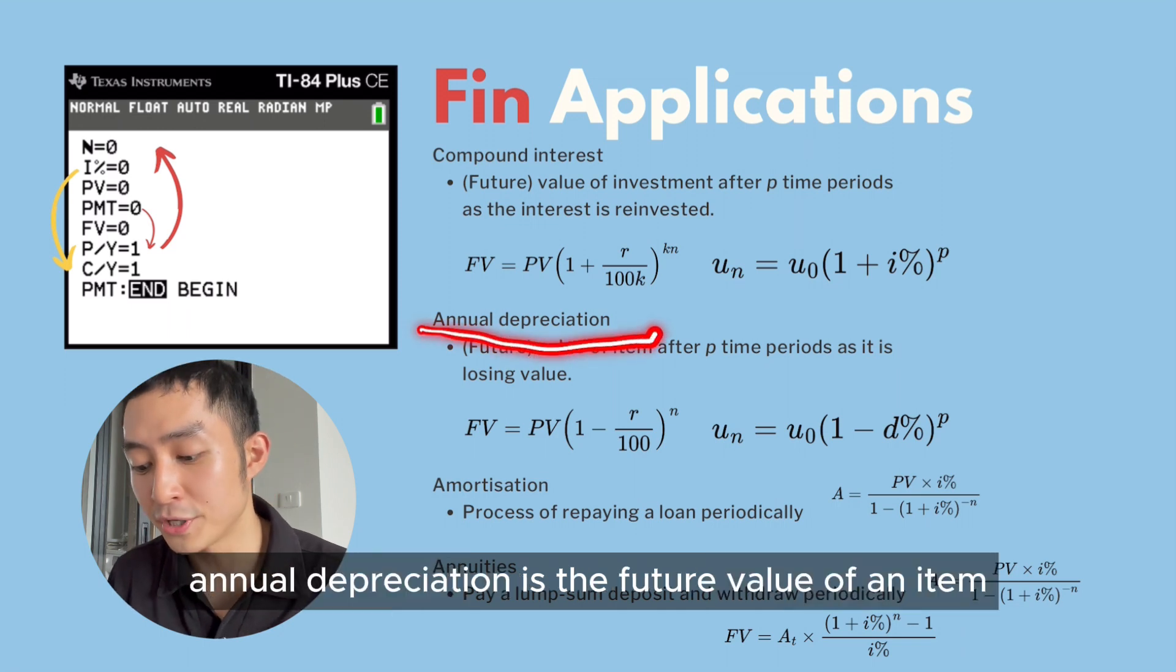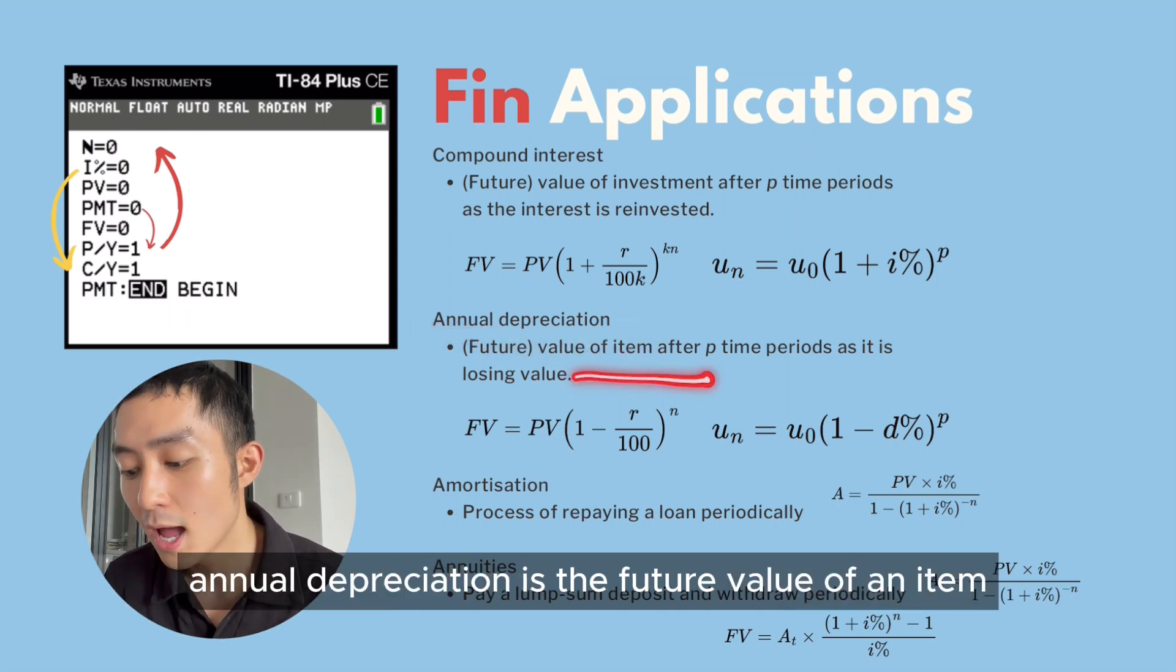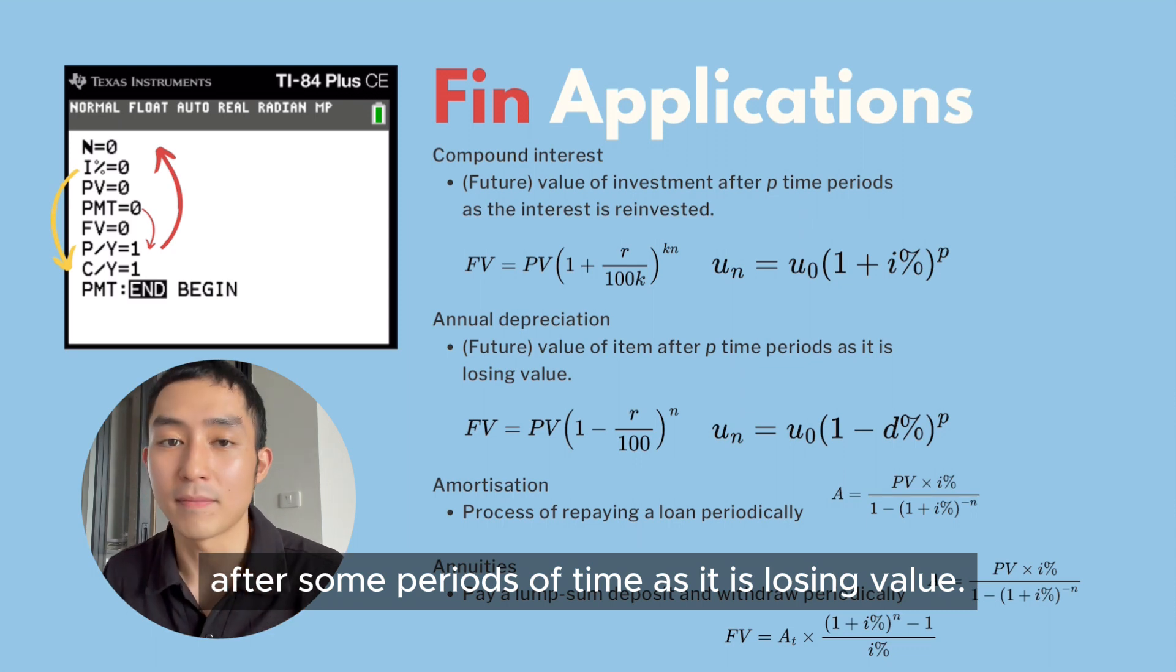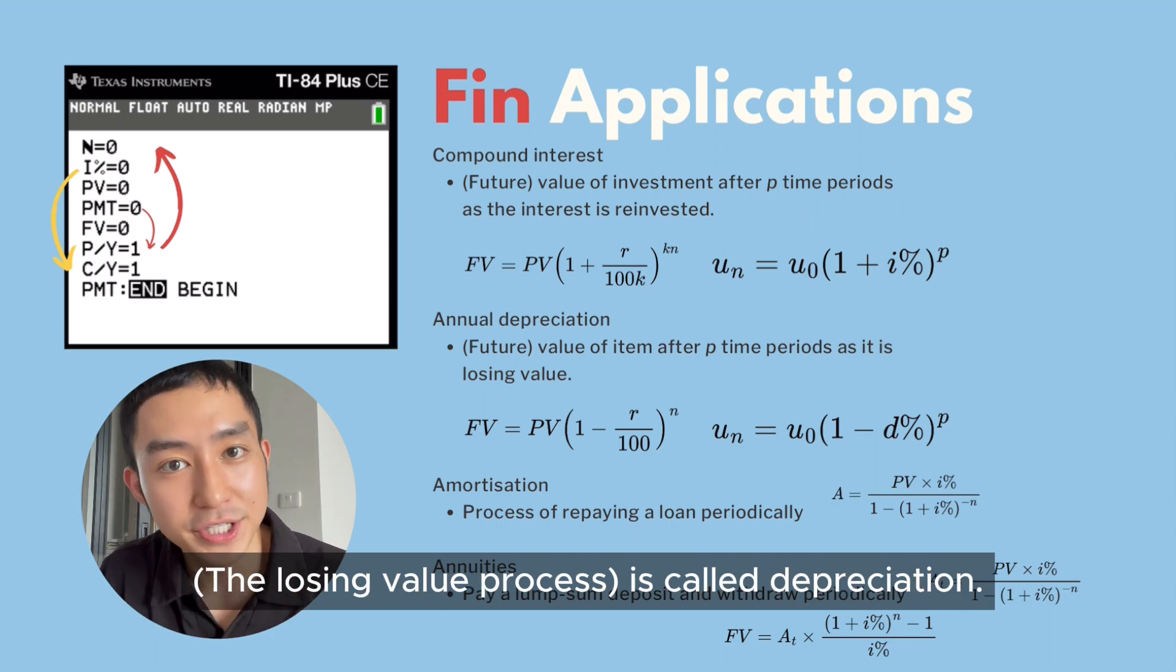By definition, annual depreciation is the future value of an item after some periods of time as it is losing value. And that is called depreciation.